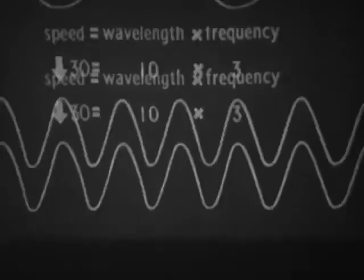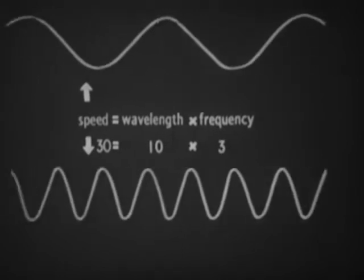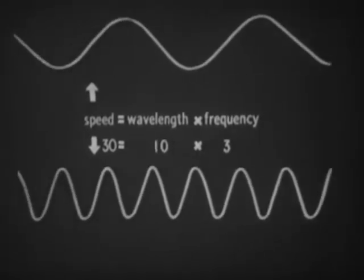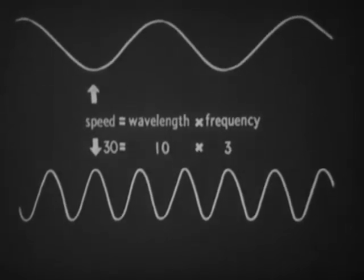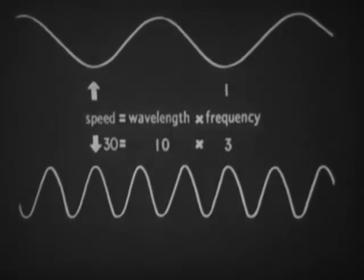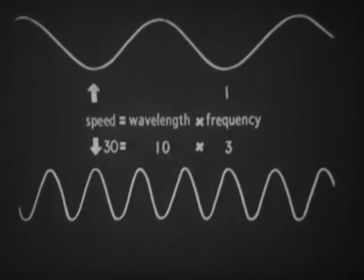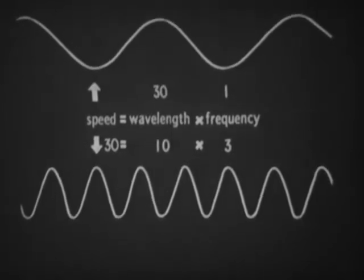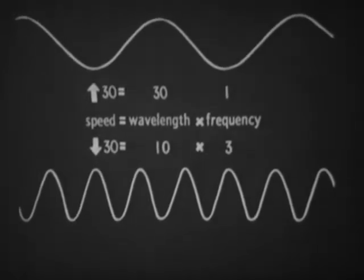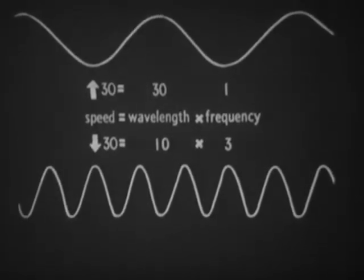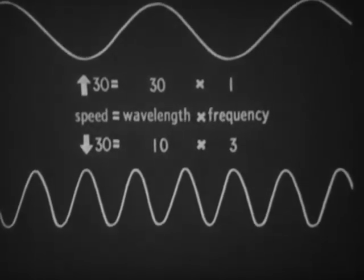Can we now calculate the speed of the wave? If each wave is ten centimetres long and in one second three waves have passed, then the wave has travelled ten times three, or thirty centimetres, in one second. The speed is the wavelength times the frequency. Notice that the other wave has a frequency of one cycle per second — a third of what it was — but the wavelength is three times what it was: thirty centimetres instead of ten centimetres. So we get the same speed, thirty centimetres per second, when we multiply the two together. This, then, is an interesting connection between speed, wavelength, and frequency.